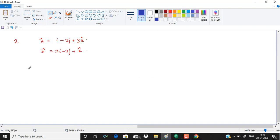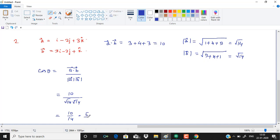In question number 2, we have two vectors. We need to find the angle between them. So we can write cos theta equals A dot B upon magnitude of A magnitude of B. After calculation, theta is equal to cos inverse of 5 by 7.